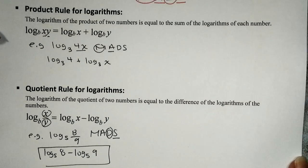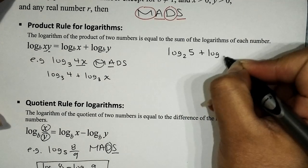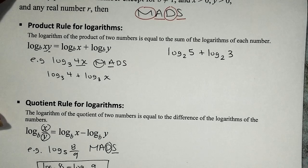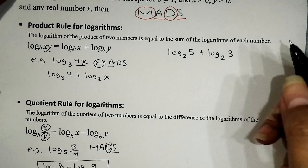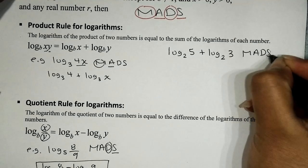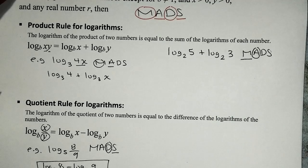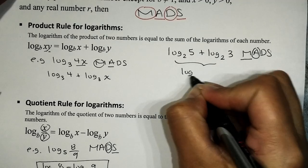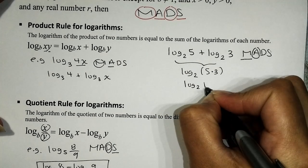Let's do two more bonus problems. First: logarithm base 2 of 5 plus logarithm base 2 of 3 — write it as a single logarithm. Do I have an addition problem? Yes. If we have an addition, we backtrack to a single logarithm by multiplying the arguments. The product of 5 and 3 is 15, so we get logarithm base 2 of 15.